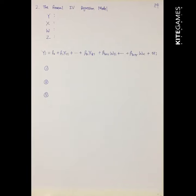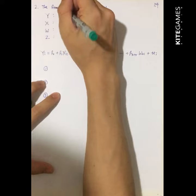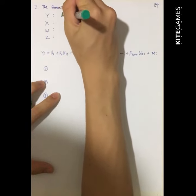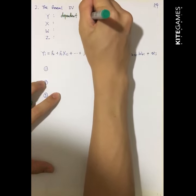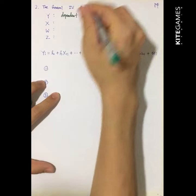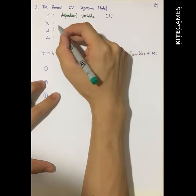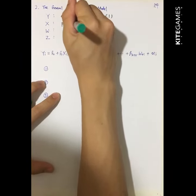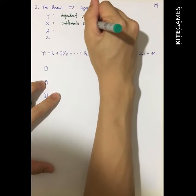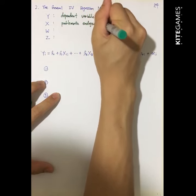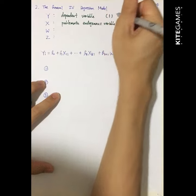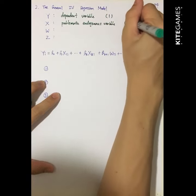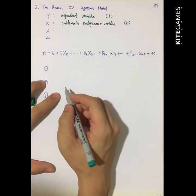Next, we will construct the general IV regression model. I will introduce you to four variables. The first is y, the dependent variable — there is only one dependent variable. Second is x, the problematic endogenous variables. Assume there are k number of x.